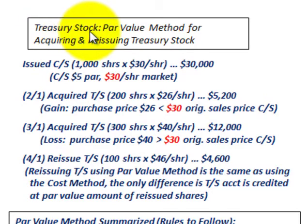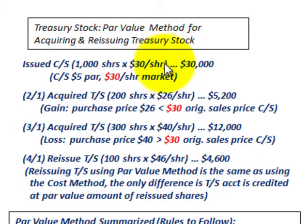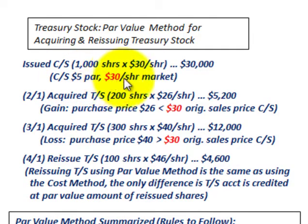We're going to be looking at treasury stock using the par value method for acquiring and reissuing treasury stock. We'll start with common stock, because that becomes the basis for this par value method. We issued 1,000 shares of common stock at $30 per share, equating to $30,000. The common stock has a $5 par value per share, and its market price was $30 per share.